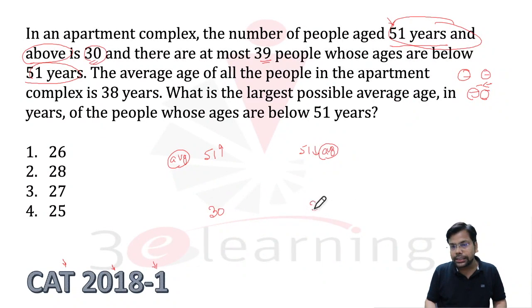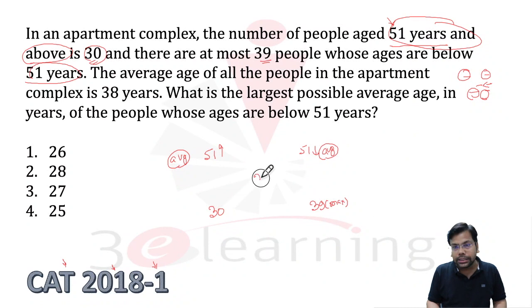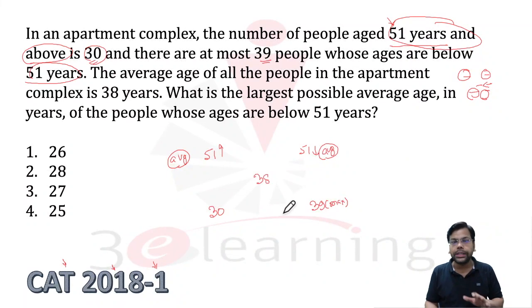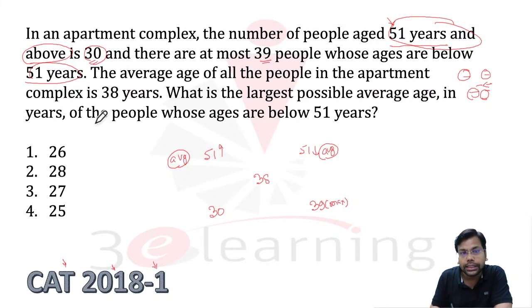At most 39 is the maximum. The average of the entire complex is 38 years. Now we need to find what is the largest possible average age — what is the maximum value it can take.